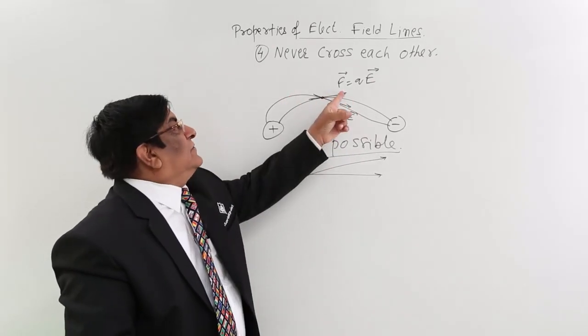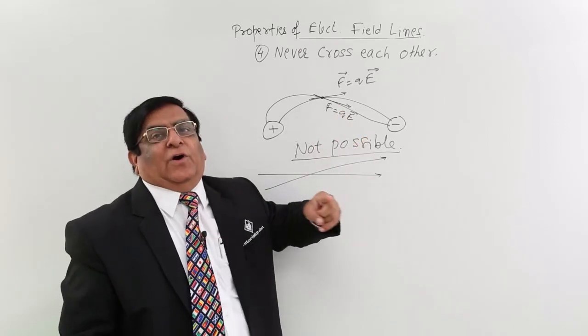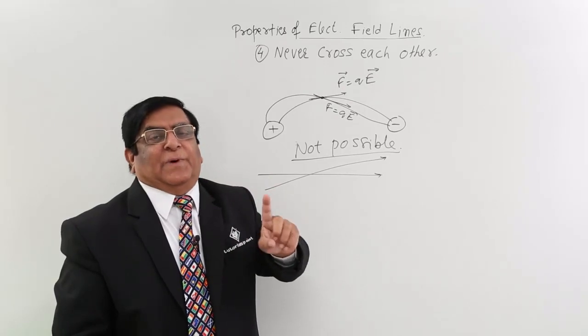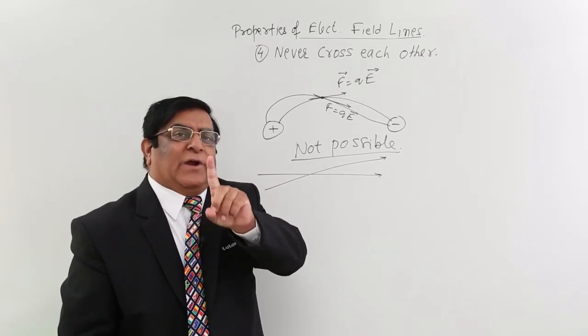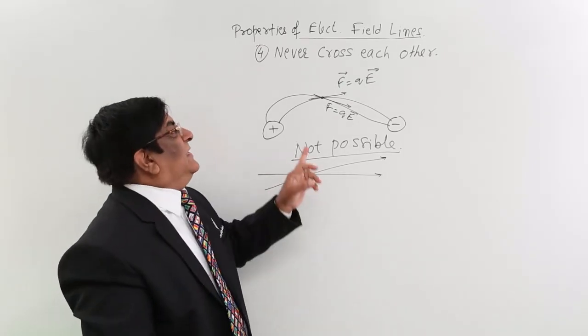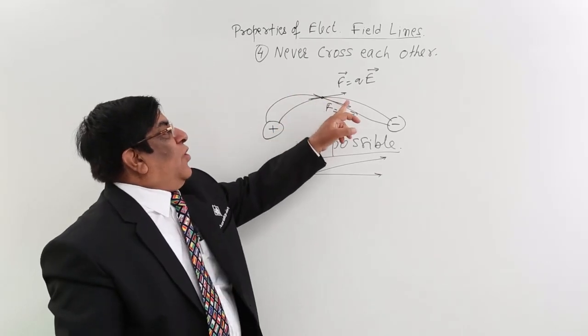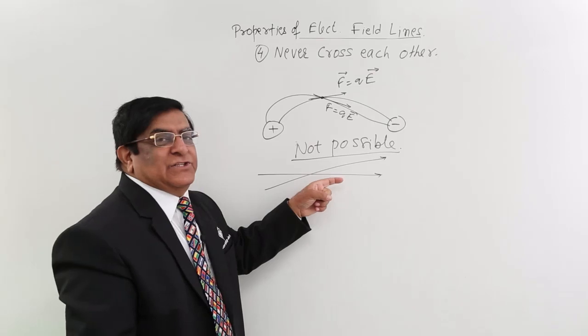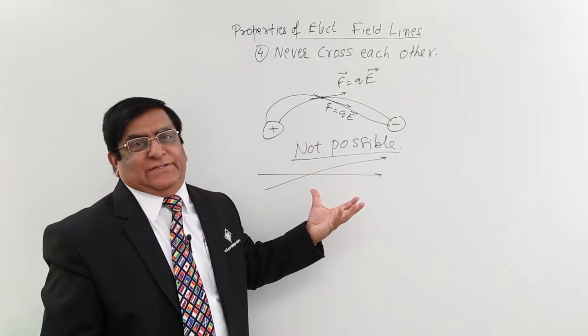So why are these two directions showing? Because we have made the diagram wrong. There is nothing wrong with the principle that there will be at one point one direction of force. That means we have made our diagram wrong, and making a diagram where the lines are crossing each other is erroneous.